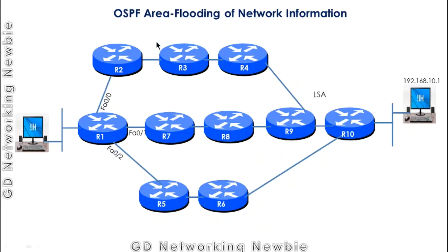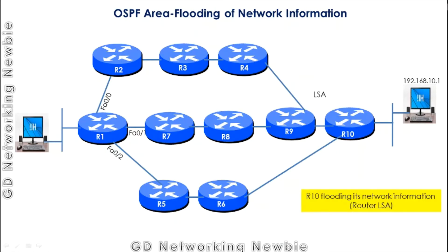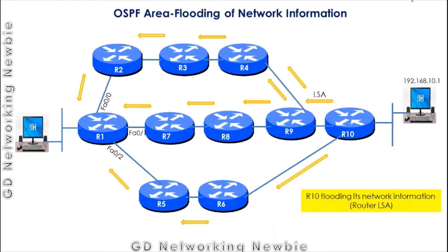When routers are configured with OSPF, every router conveys every information to the other routers so that they can build their routing tables. For example, R10 has to send specific OSPF messages known as LSA — Link State Advertisement. R10 alerts its network information to all remaining routers; the information goes to neighbors, neighbors forward to others, and this way it reaches R1, which also sends that information to all other routers. Similarly, R7 has to send its information to all routers.